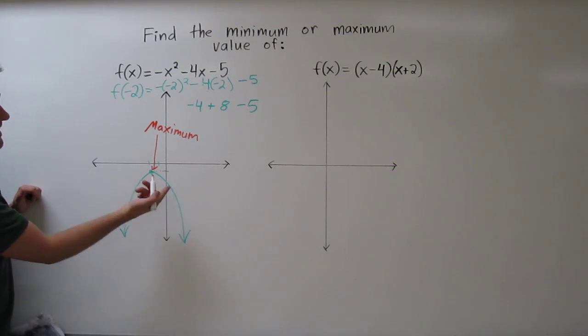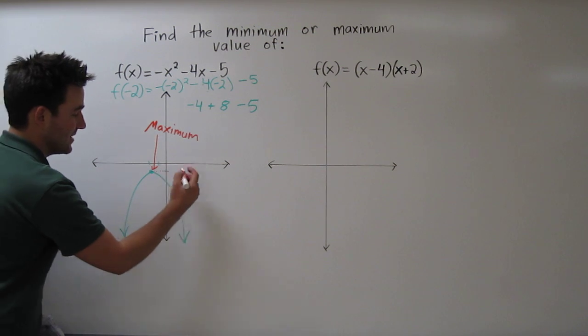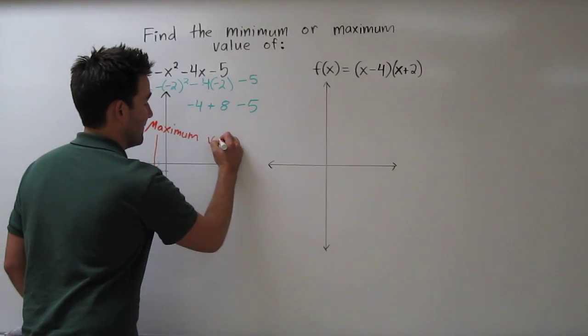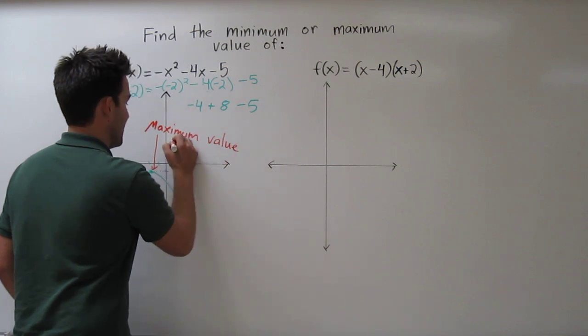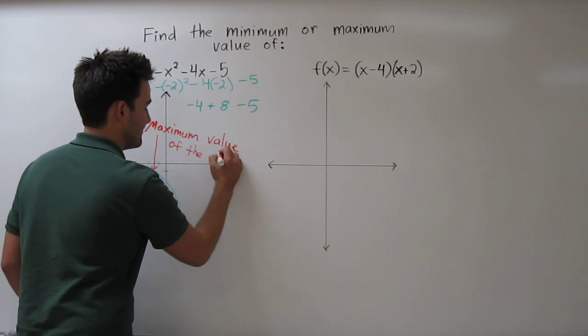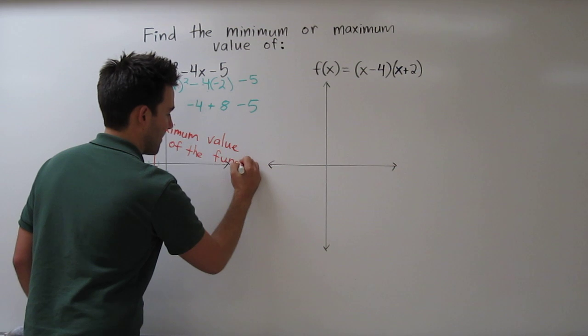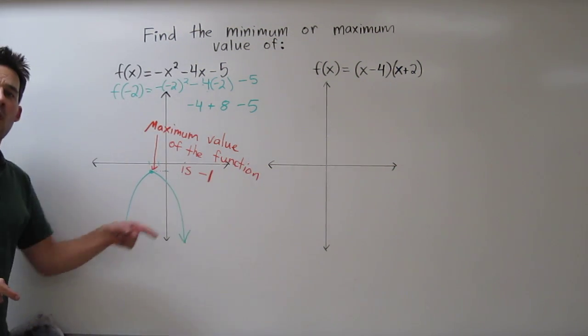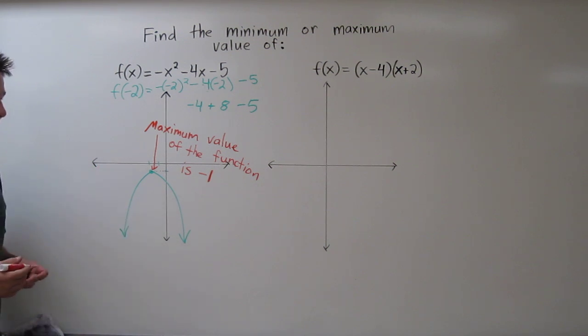The function never has a greater value than it does right at the vertex. And the vertex was located at negative 2, negative 1. So the maximum value of the function is negative 1, which is the y-coordinate corresponding to the vertex. Let's do one more example.